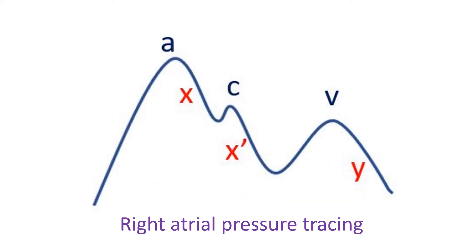The basic principle of cardiac catheterization is that in whichever chamber the catheter is introduced, pressure and oxygen saturation is measured. Continuous monitoring of the pressure at the tip of the catheter is done to obtain the pattern of the pressure tracings. The pattern of the tracing varies between the various heart chambers and also depending on disease conditions.